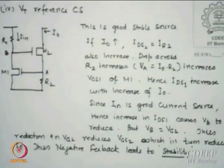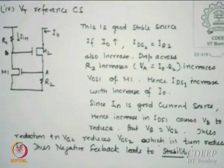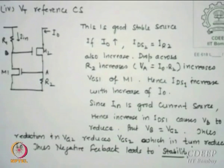Let us start with the part ahead. Another current source which is very popular - one of the reasons we discussed Wilson is how much voltage appears across the resistance at the source, which is very relevant in many applications. There is another reference available in the book by Lee, Boyce, and Baker, which covers both current mirrors and current sources.